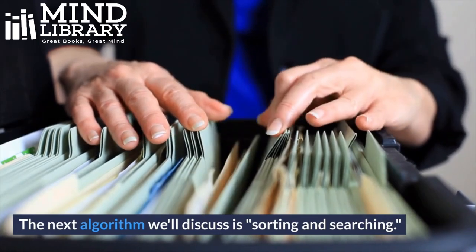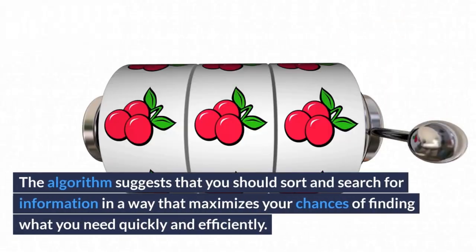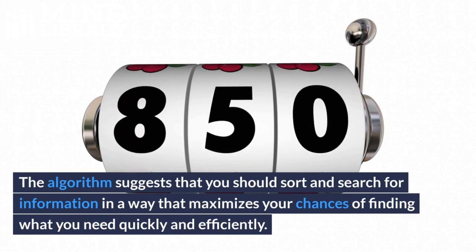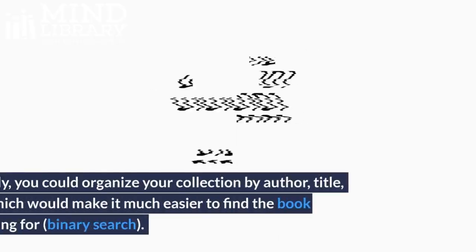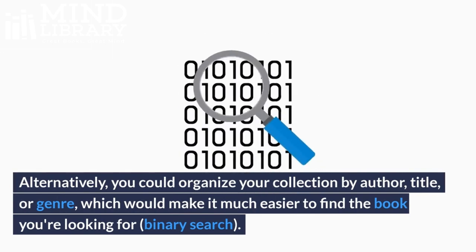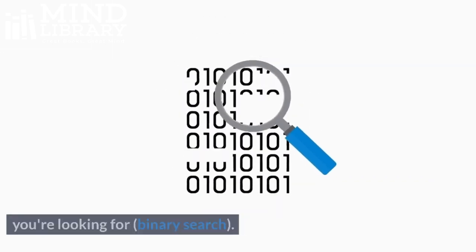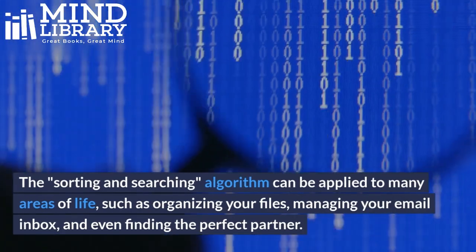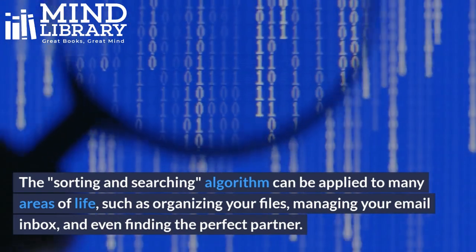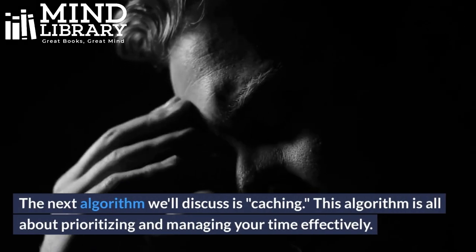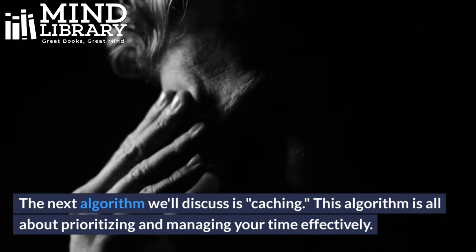Two: Sorting and Searching. The next algorithm is sorting and searching. It suggests that you should sort and search for information in a way that maximizes your chances of finding what you need quickly and efficiently. For example, you could organize a collection by author, title, or genre, which would make it much easier to find what you're looking for using techniques like binary search. This algorithm can be applied to organizing your files, managing your email inbox, and even finding the perfect partner.